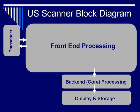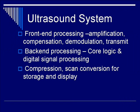On the left-hand side you have the transducer, discussed in the previous lecture. Signals flow in and out through the front-end processing block, which feeds into the back-end core processing block, then into display and storage. An ultrasound system basically contains these three big blocks. Front-end processing handles amplification, compensation, demodulation, and transmission. Back-end processing crunches the numbers. Finally, compression and scan conversion are used for image storage and display.